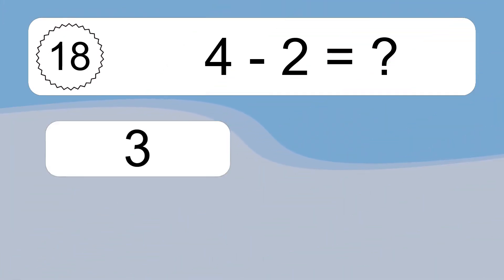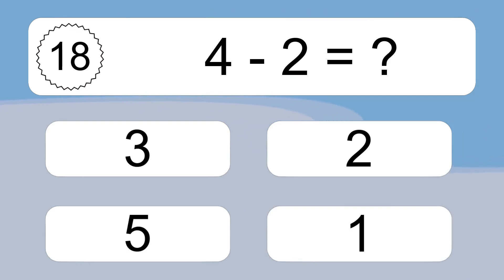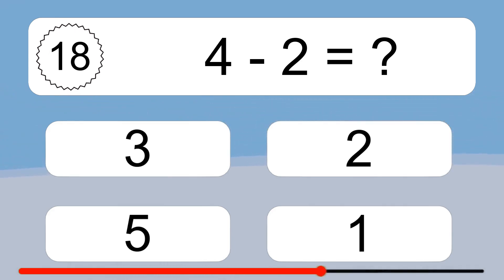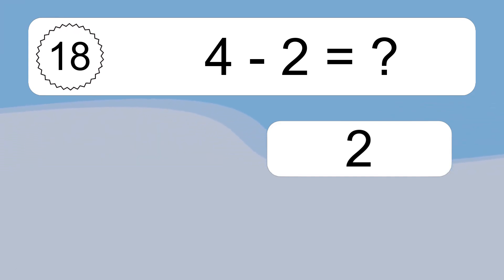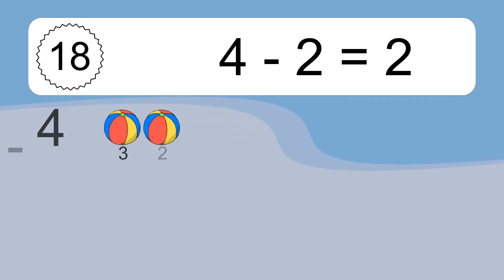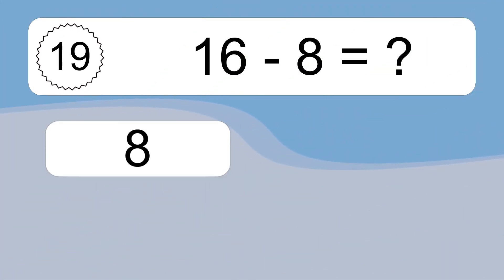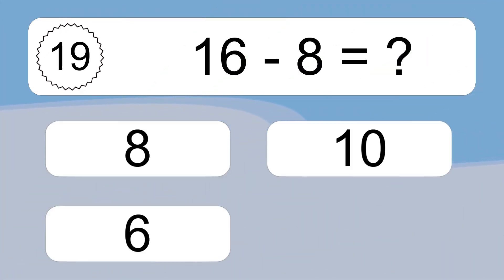4 minus 2 equals what? 4 minus 2 equals 2. Let's count it: 3, 2.